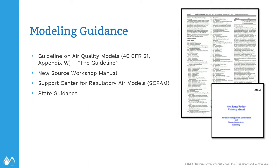EPA uses guidance documents to provide more detailed guidance on different topics. The New Source Review Workshop Manual has more detailed guidance for NSR modeling requirements, but use it with caution — it was issued in 1990 and has some outdated information. The Support Center for Regulatory Air Models, or SCRAM, has the air dispersion models and executable files available to download and run. Most states that require state modeling have their own modeling guidance — some for criteria pollutants, some for toxic air pollutants, and some for special emission sources. Just be sure to check all applicable guidance and that it's up to date.